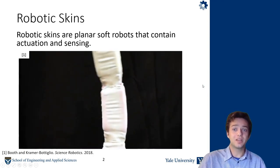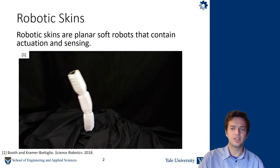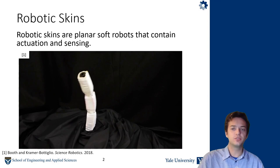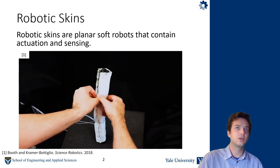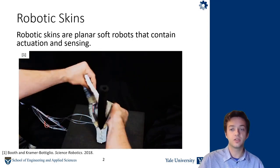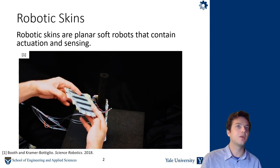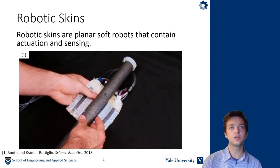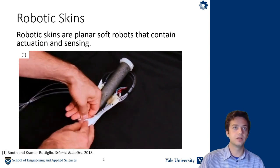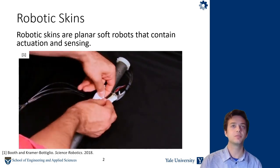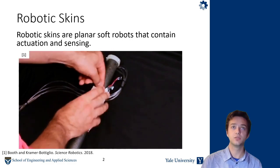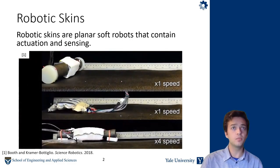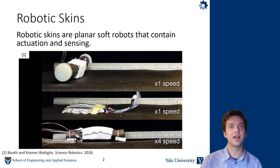So robotic skins combine actuation and sensing in two-dimensional soft robots. Robotic skins are modular and reconfigurable, so you can wrap them around soft bodies to transform them into robots. In this skin here, you can see it can be detached and then reattached, wrapped around something else to transform it into a robot, or it can actually actuate on its own.